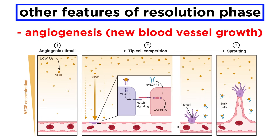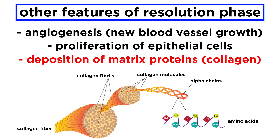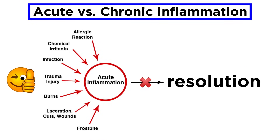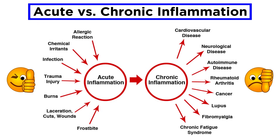The resolution phase also involves repair of damaged tissue, which includes angiogenesis effects, meaning the growth of new blood vessels, proliferation of epithelial cells, and deposition of extracellular matrix proteins like collagen to restore the tissue to its proper function. When a tissue doesn't go through this resolution phase, however, either because of an inability to clear the pathogen, tissue damage that perpetuates the immune response, or something else, the result is chronic inflammation.